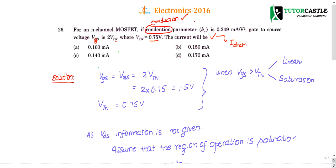Don't get confused or panicked by seeing this question. It is very simple, and in GATE every year a question from this model is almost certain — you can check the previous year papers. Every year a question on MOSFET based on the current equation is asked. Last year in 2007 he asked about whether the region of operation is saturation or linear. Even the current equations are useful to find the region of operation.